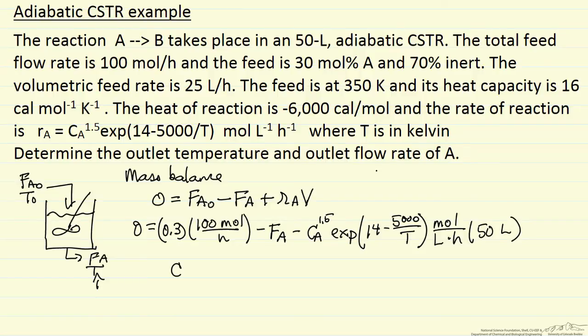Now, we don't know CA, so it's another variable. But we can write CA in terms of molar flow rate and volumetric flow rate. Molar flow rate, of course, is our unknown. The volumetric flow rate, we're given, 25 liters per hour.